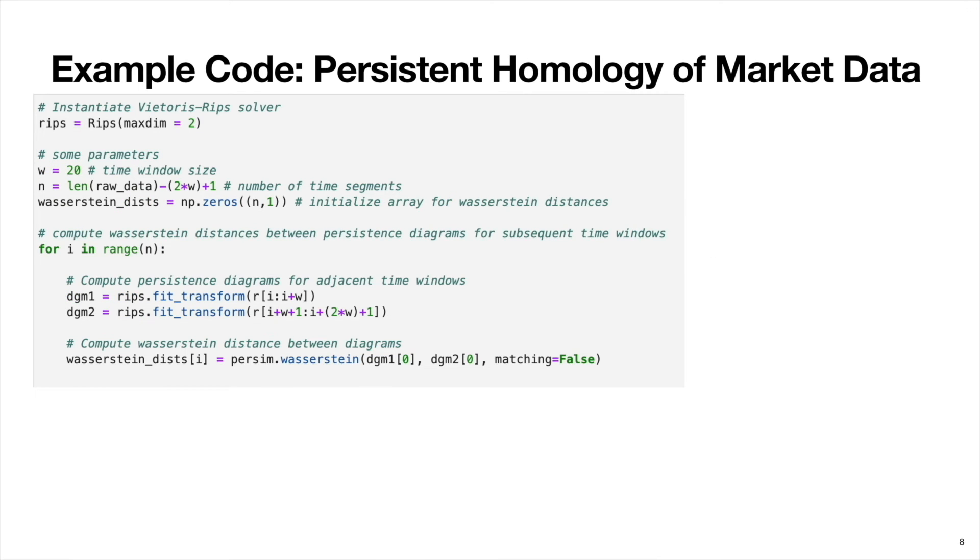Okay, so now we get into the TDA stuff. So in this analysis, we want to track changes in the shape of the markets by looking at how the homology of the market changes over time. So to do this, we start by initializing this object that constructs simplicial complexes from data. Next, we define a time window size, which will allow us to grab a chunk of data to analyze the homology of. So here we're setting this window size to 20 days.